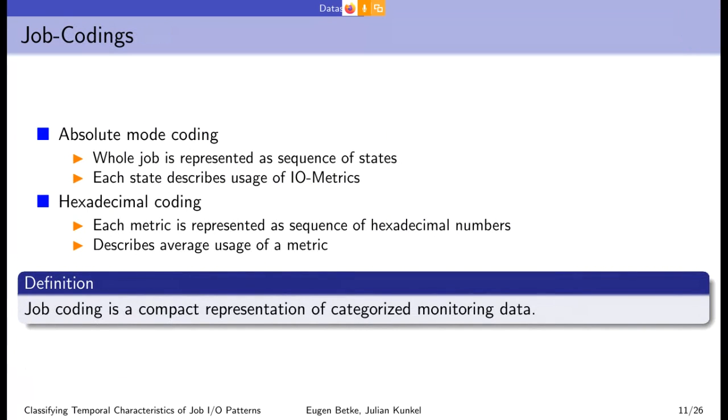Job codings in the context of these presentations are compact representations of the categorized monitoring data. The purpose is to reduce dimensionality of data and to make data suitable for algorithms. So we investigated two coding styles. One of them is the so-called absolute mode coding. It is a sequence of numbers where each number encodes all metrics in a segment. That means that this number is reversible. Having only this number, we can say which metric was used. Hexadecimal coding encodes each metric with a hexadecimal score, which means we aggregate nodes and file system dimensions.